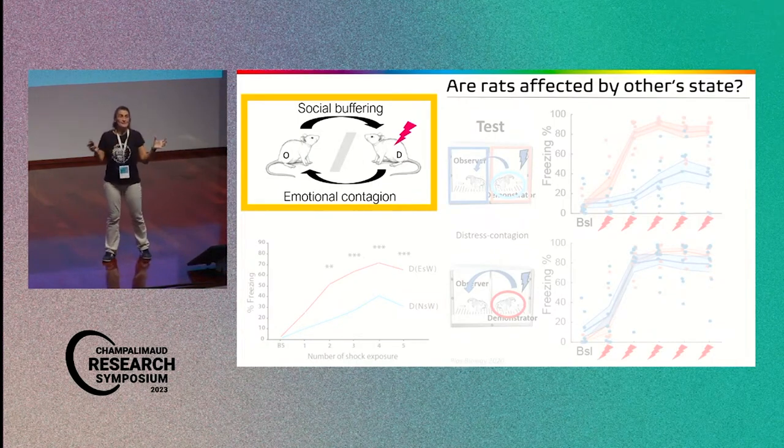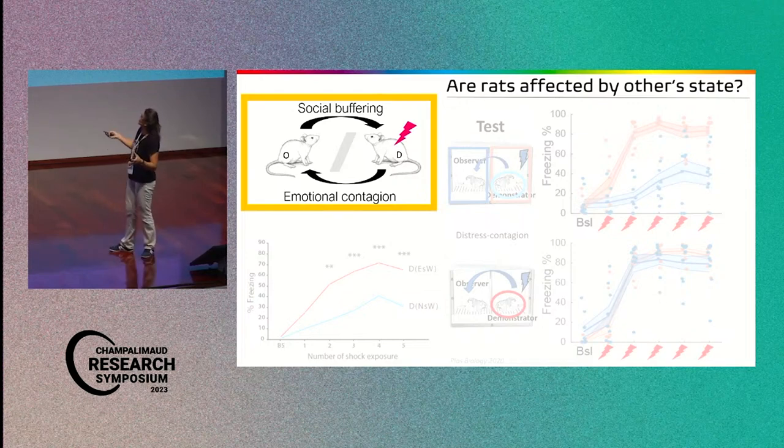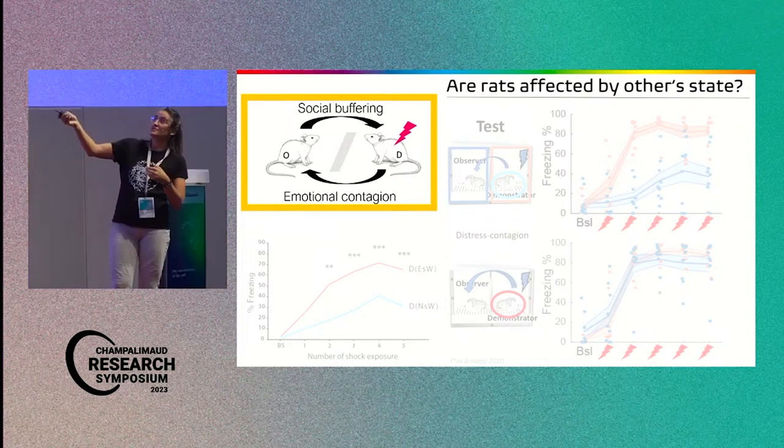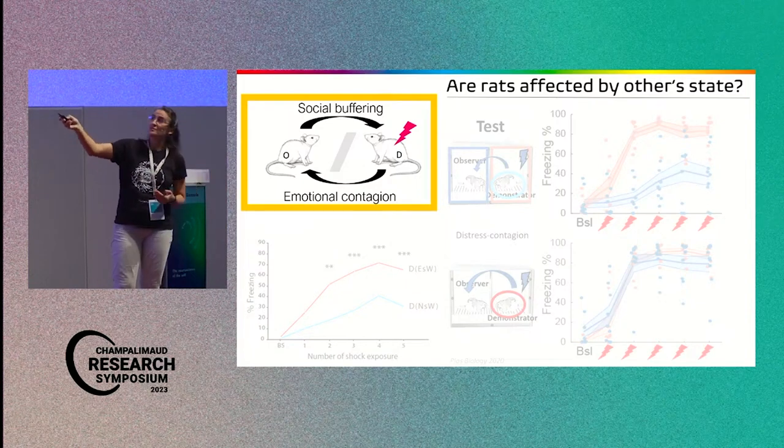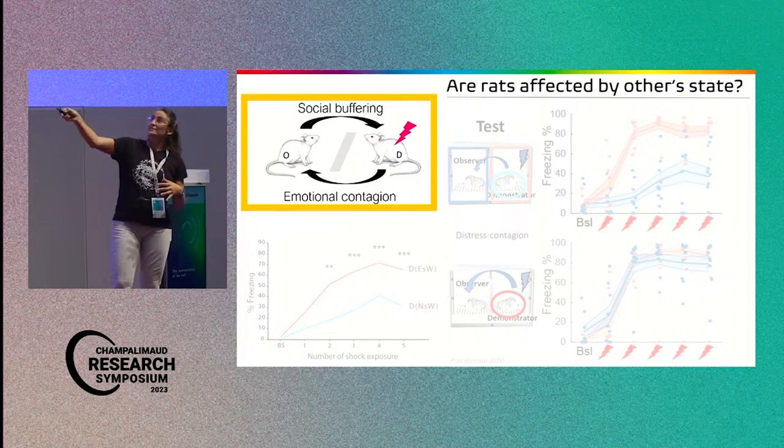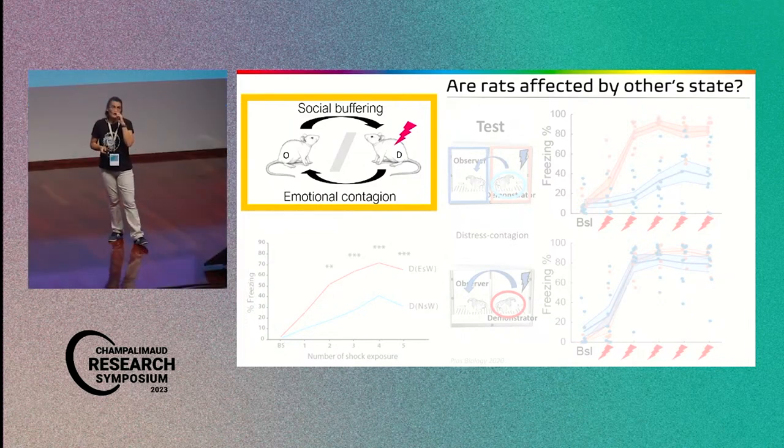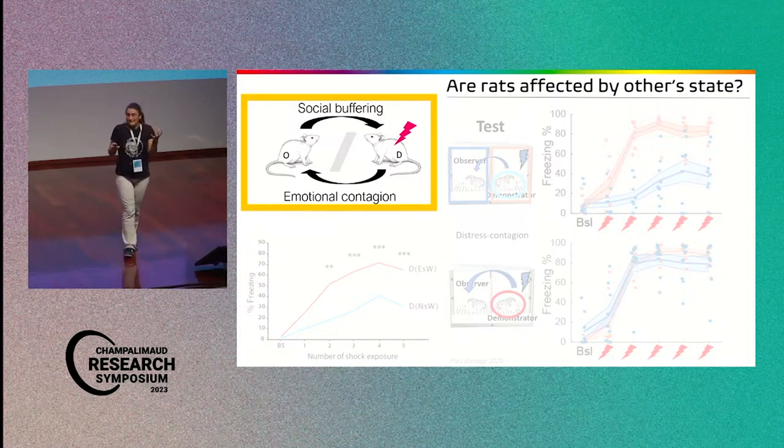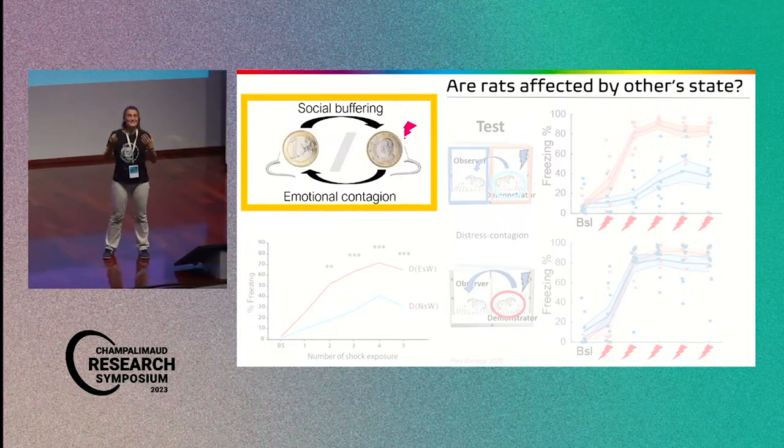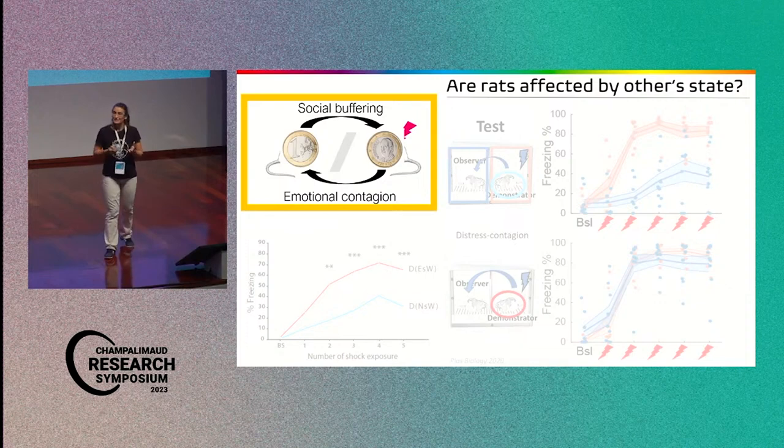And for many years, until not that long ago, these two fields of research were really separated, where when you would look at the effect of the stress demonstrator on the observer, you would speak of emotional contagion, and when you would look at the fact that the calm individual has on a stressed one, then you would speak of buffering. But maybe this is simply like the two sides of a coin, and we are talking of a very similar mechanism here.